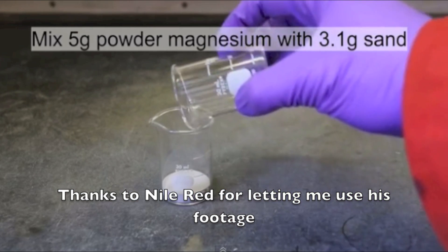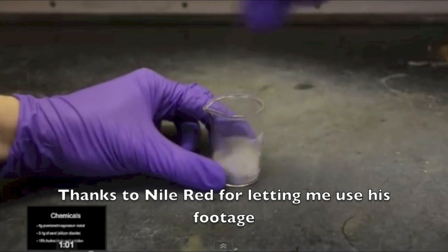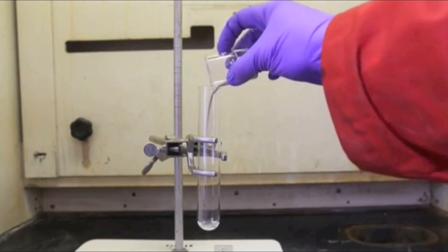In his video, Niall Redd synthesizes magnesium silicide by heating together silicon dioxide, or sand, and magnesium metal in a test tube.